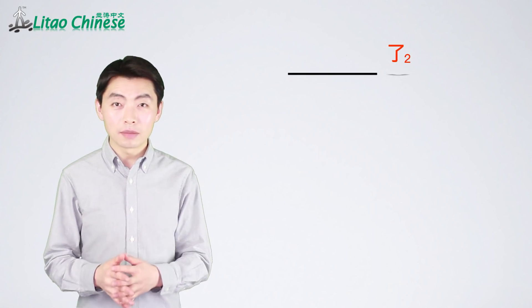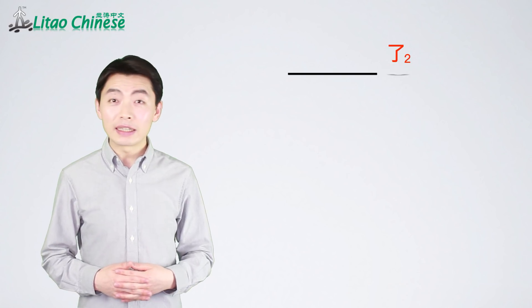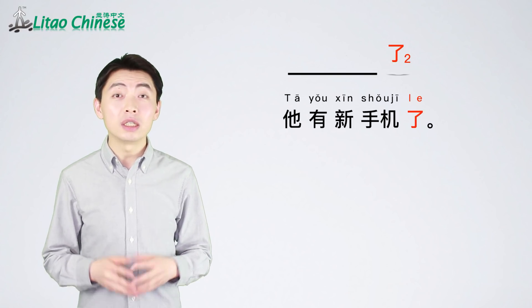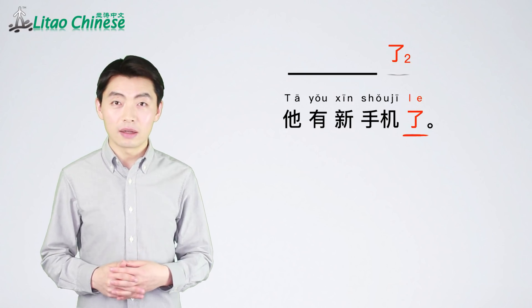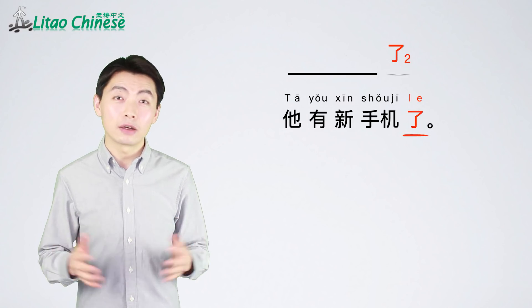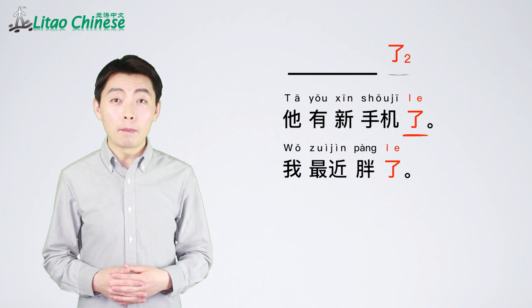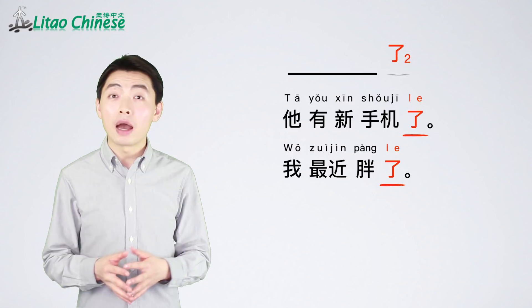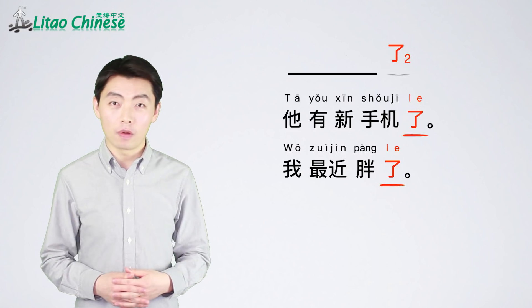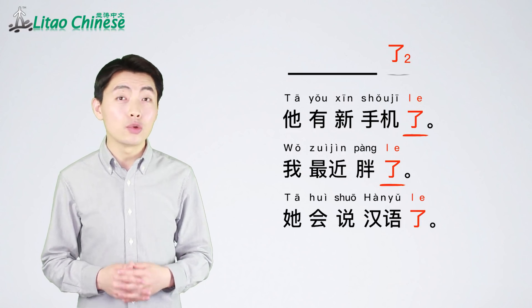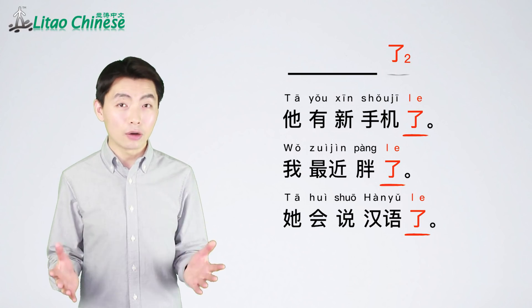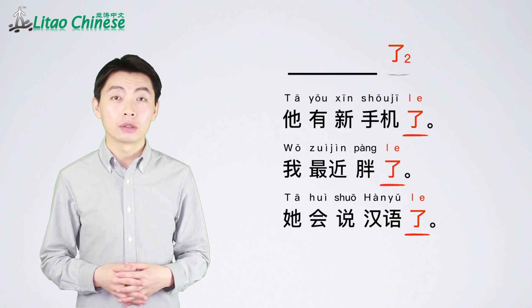But 了₂ comes at the end of the sentence to indicate a change or new situation. For example: 她有新手机了 — 了 tells us that she has a new mobile phone now; this is a new situation because before she just had an old one. 我最近胖了 — 了 implies I was thinner before; I have gained weight recently and now look fatter than before. 她会说汉语了 — with 了, we know she couldn't speak Chinese before, but now she can. This is a change or new situation.